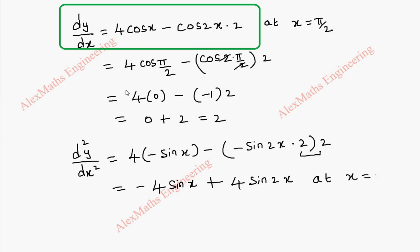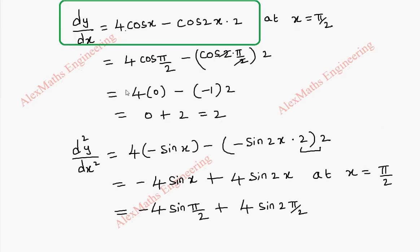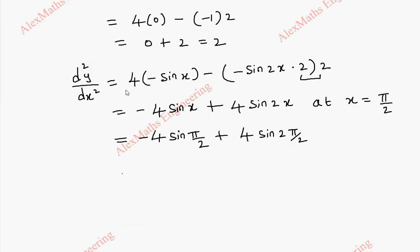And again we have to find its value at x equal to pi by 2 and this will be minus 4 into sin pi by 2 plus 4 into sin 2 into pi by 2. So finally we get the first part as minus 4 into sin pi by 2 is 1 plus 4 into sin pi which is 0. So this value is minus 4.